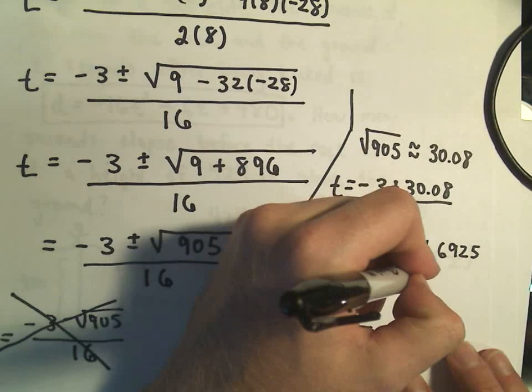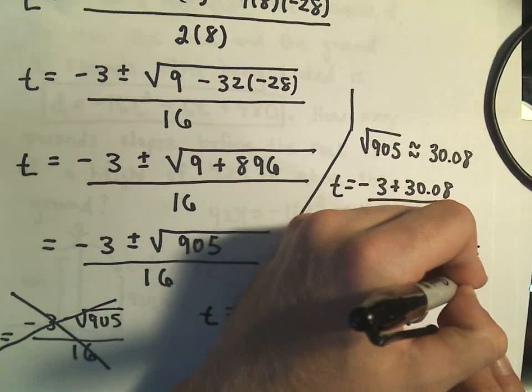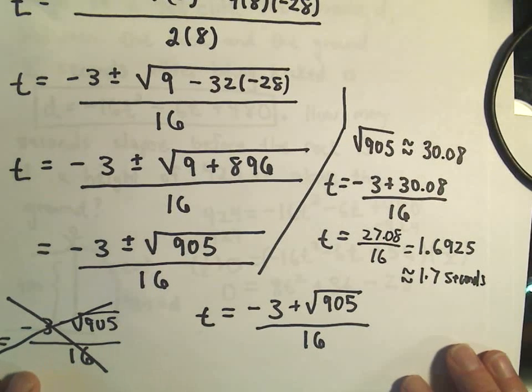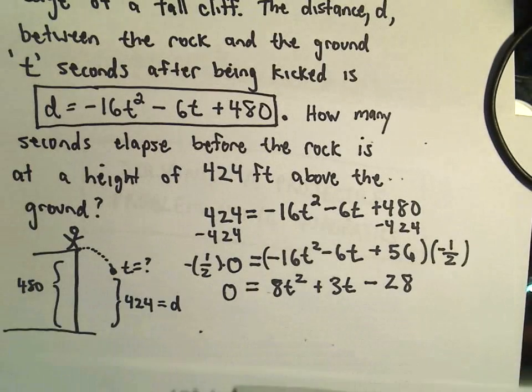So roughly 1.7 seconds later, 1.7 seconds after kicking this stone off the cliff is when it's going to be at a height of 424 feet above the ground.